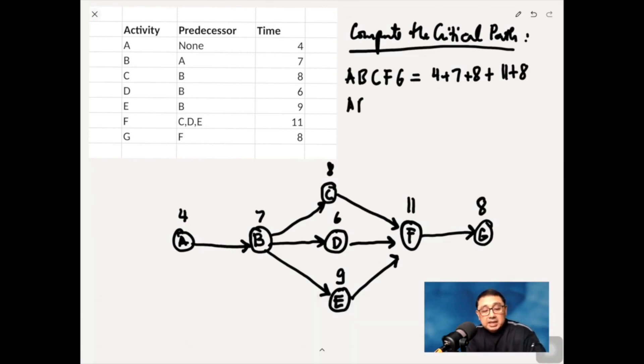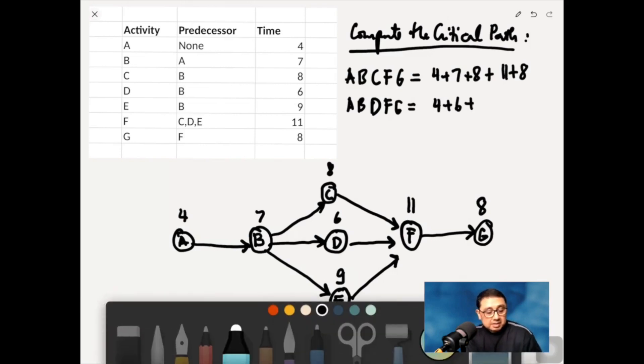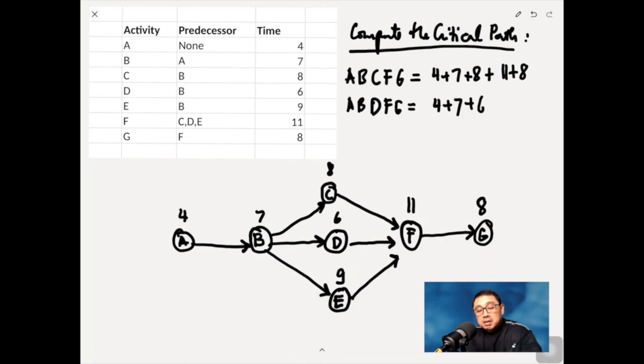And then next is A, B, D, F, G. So that's 4 plus 7, plus 6, and then you have 11, and then 8.